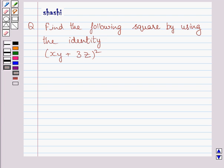Hi and welcome to the session. Let us discuss the following question. Question says, find the following square by using the identity.